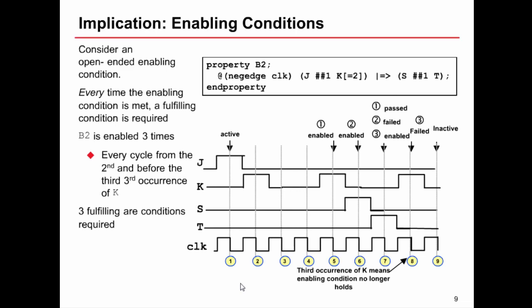To summarize what we've seen over the last two slides showing the difference between how fulfilling conditions and enabling conditions are treated. For enabling conditions, then every time the left hand side of implication occurs, we require the right hand side of implication. So if you have an open ended sequence, that's probably more times than we really intended. If we have open ended sequences on the right hand side of implication, however, as a fulfilling condition, then the earliest opportunity at which behavior observed matches the behavior required by the property results in the property either passing or failing and then becoming inactive.